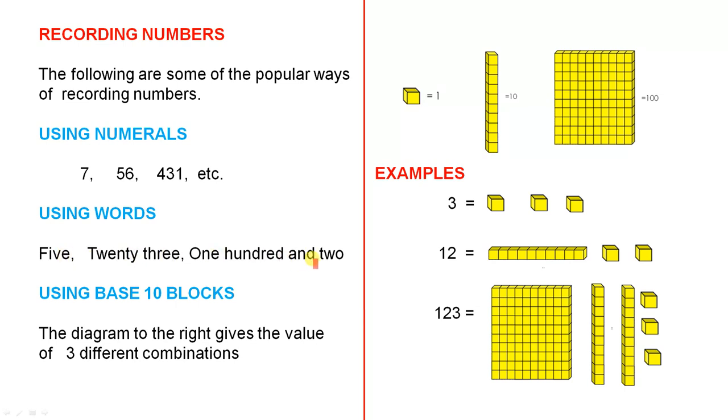You can also use words: five, twenty-three, one hundred and two. You can actually write them down. When you want to use calculations, which we'll see later, you have to use the numeral system. You can't really do calculations using words, but you can write numbers down that way.